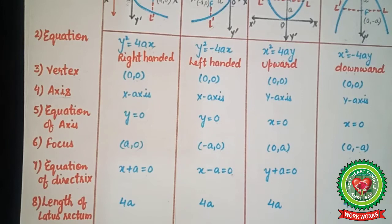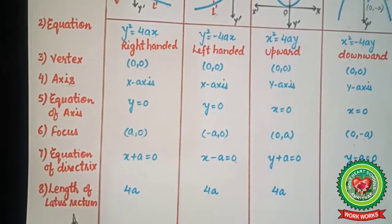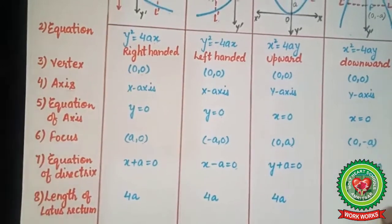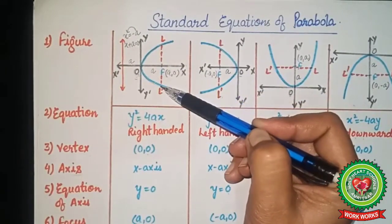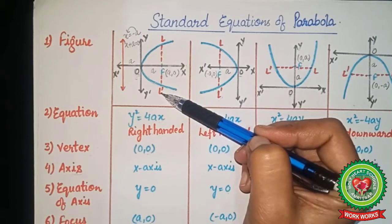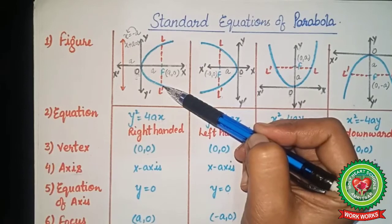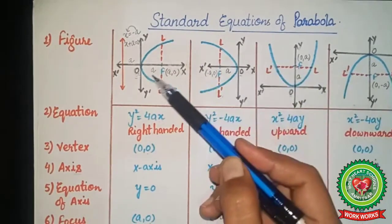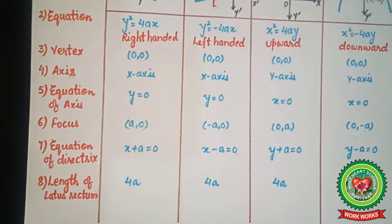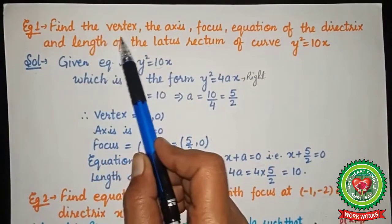The next property is the length of the latus rectum. The latus rectum is a line passing through the focus that cuts the parabola at two points — LL' is the latus rectum. The length of the latus rectum is 4a, and this is the same in all cases. These are all the properties related to the different types of parabola.